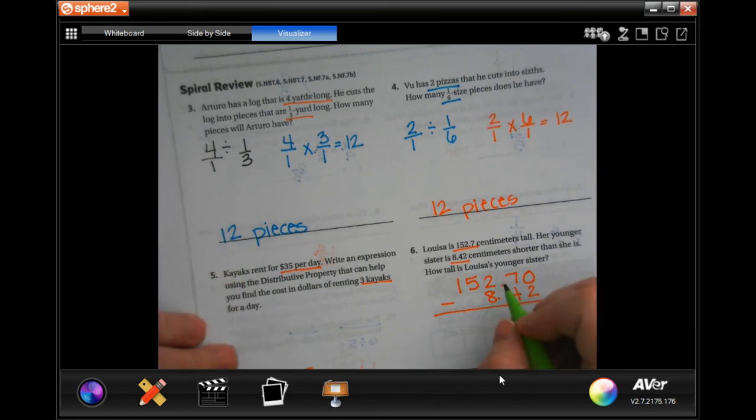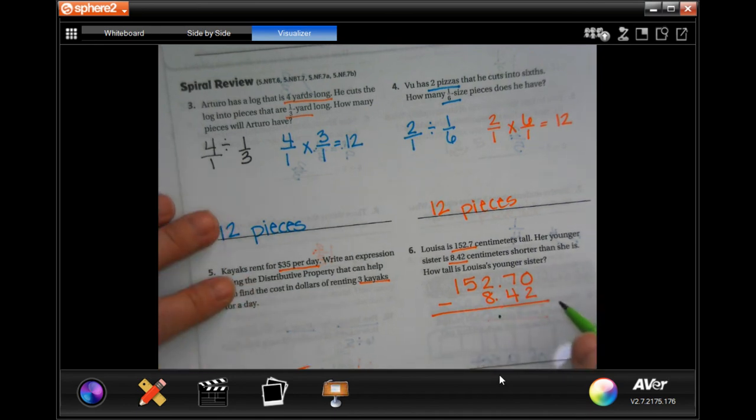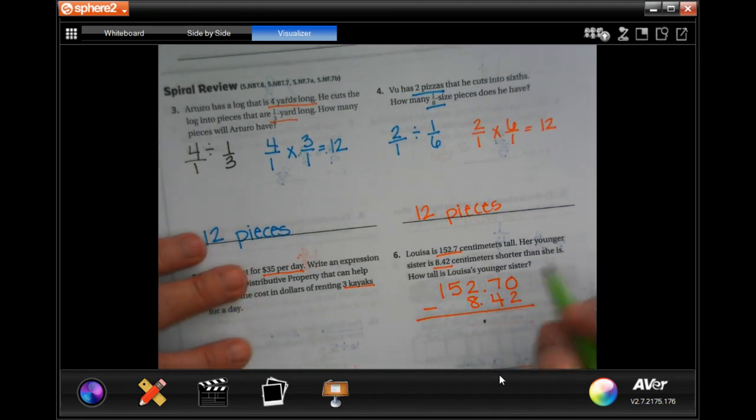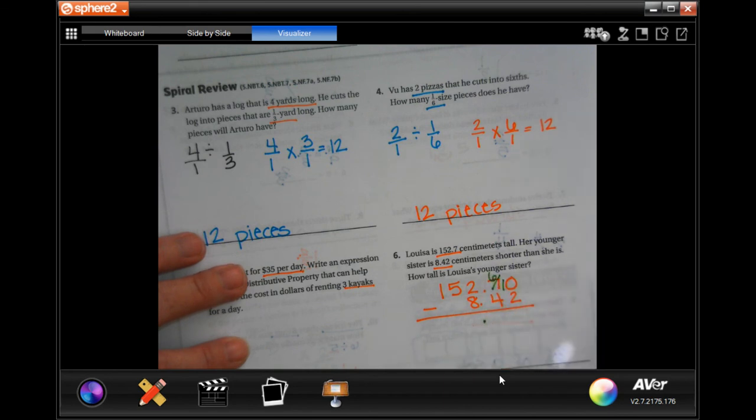All right, so now the very first thing I'm going to do is I'm going to drop my decimal. Absolute first thing I do every time I'm working with adding or subtracting decimals is to drop my decimal. Zero cannot take away two, so I'm going to make this a six, making that a ten.